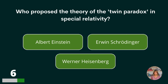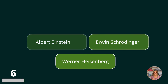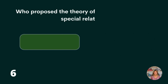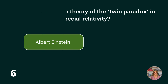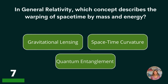Who proposed the theory of the twin paradox in special relativity? Albert Einstein, Erwin Schrödinger, or Werner Heisenberg? Albert Einstein.